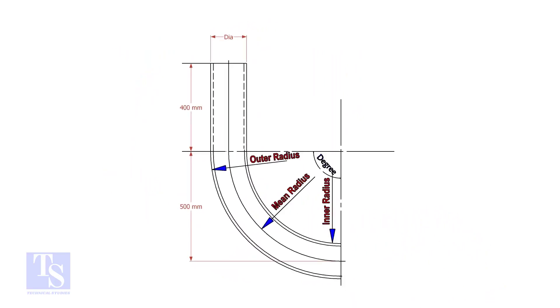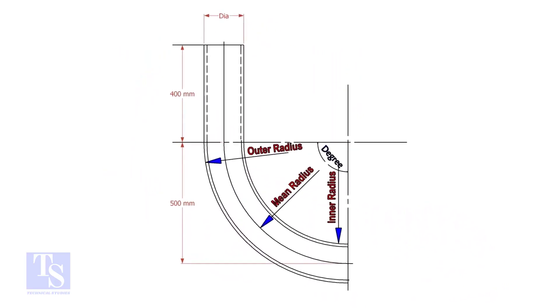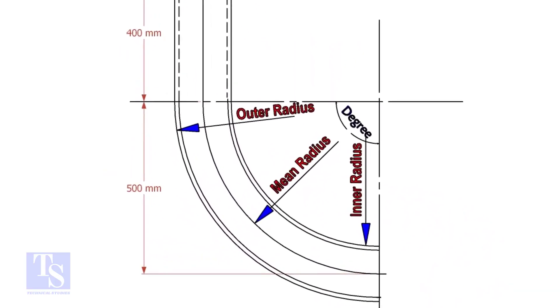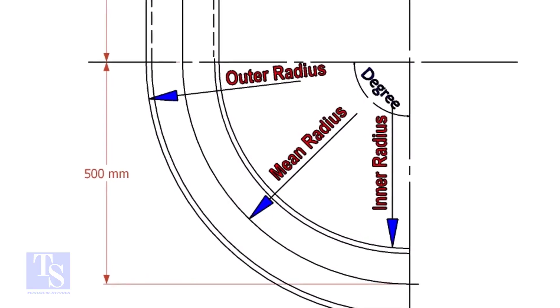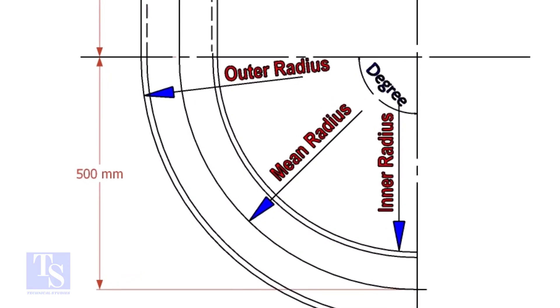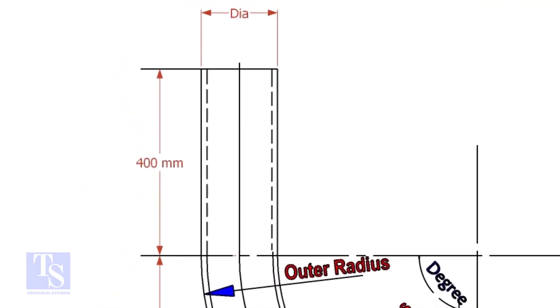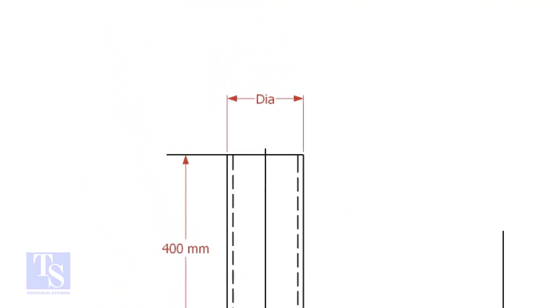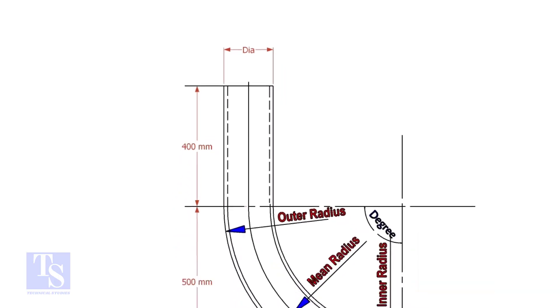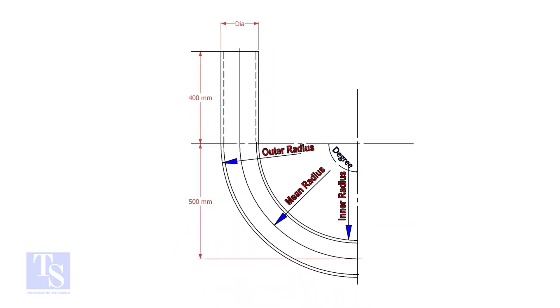To calculate the required length of a pipe to make a bend, we need to know the bend radius, the included degree, and the diameter of the pipe. In a drawing, usually the mean radius or the center radius is given.